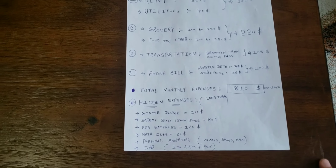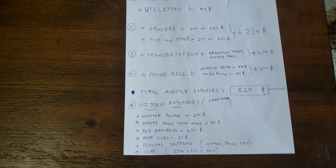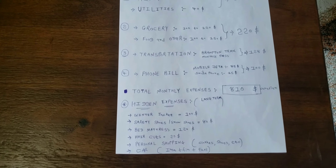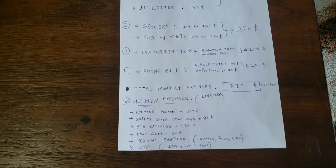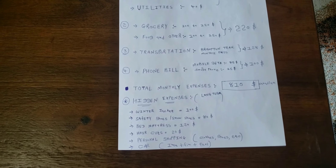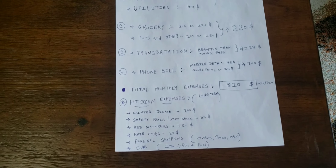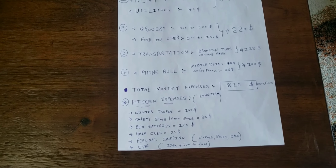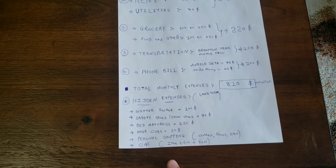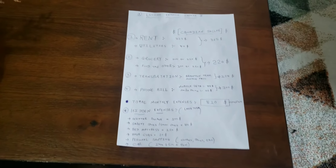There are also some other hidden expenses. If you are coming to Canada, you will need a winter jacket for snowy seasons — around $100. Safety shoes for factory or warehouse work cost around $80. A bed mattress can cost around $120. There are also haircuts, personal shopping like clothes and shoes. And if you are planning to have a car, it will cost around $700 extra every month, including financing, insurance, and fuel.